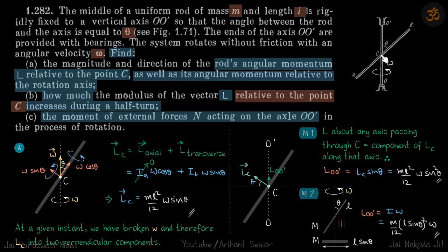Let's understand why finding angular momentum about C is complicated. If you take any particle on the rod, it will be rotating in a circle, but that circle is not centered about C — C is not at the center of that circle. If the rod were horizontal and rotating with omega, the angular momentum about C would be simply I_cm times omega. But here, the particles travel in circles whose centers are not at C.